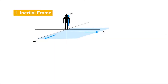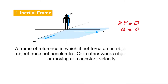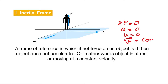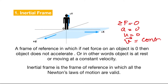The first type is the inertial reference frame. An inertial frame is a frame of reference in which, if the net force on an object — sigma F — is zero, then the object does not accelerate, meaning its acceleration is also zero. In other words, the object is either at rest with velocity zero, or it is moving with a constant velocity. This is the same as Newton's first law of motion, which states that a body at rest remains at rest, or if in motion remains in motion at constant velocity, unless acted on by a net external force.